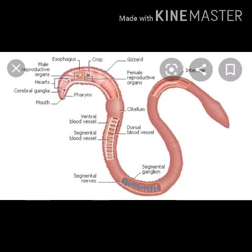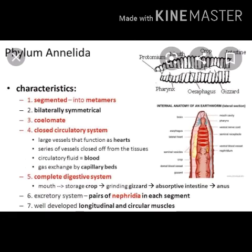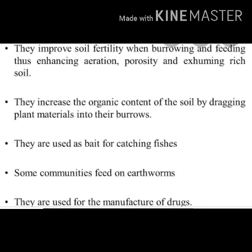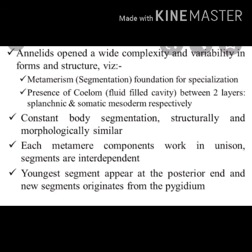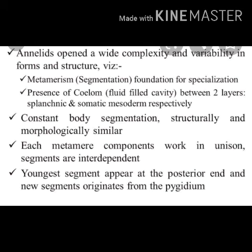Earthworms live in burrows in damp soil. They make these burrows by eating through the soil, which is taken in large quantities and passed out the other end of the body as castings. The soil contains organic matter in the form of humus and broken bits of leaves. Earthworms avoid light — they are nocturnal, crawling to the surface at night for feeding and mating. Dry soil is unsuited for earthworms, as their skin must be kept moist for respiration.